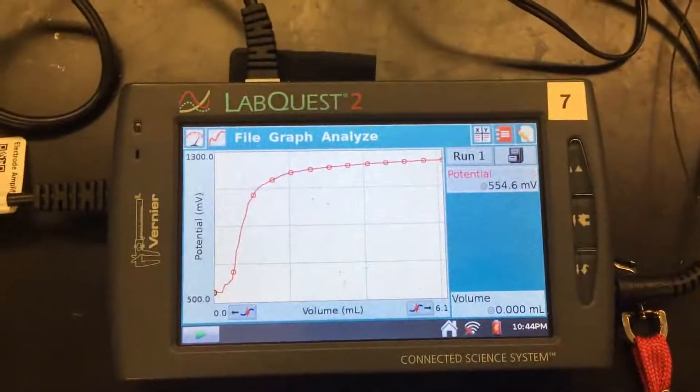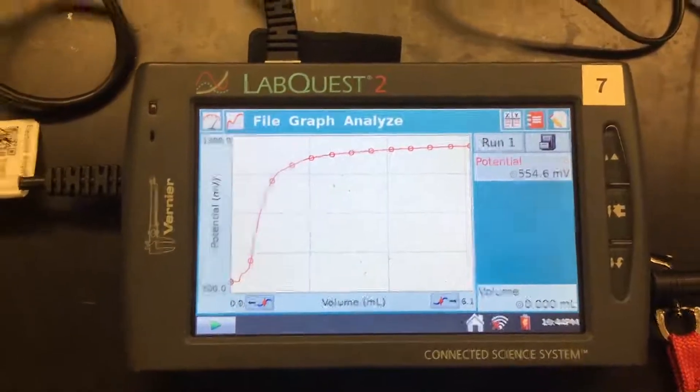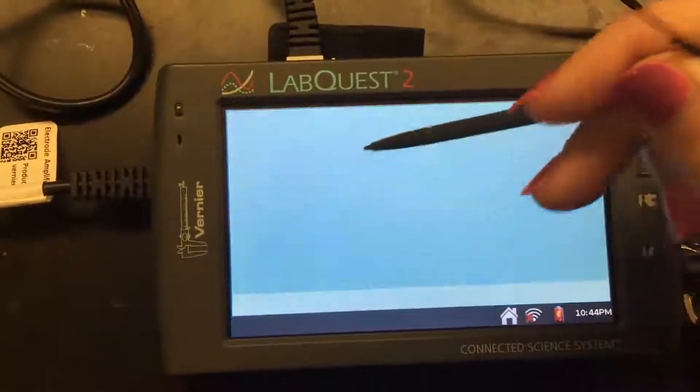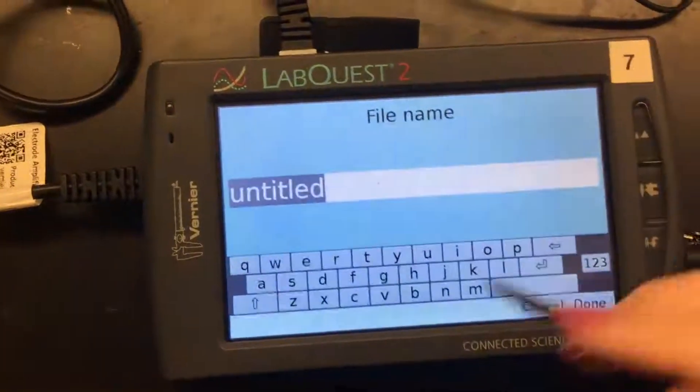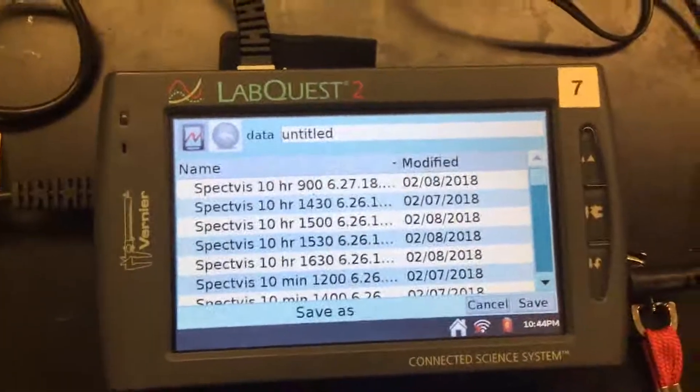So this is what the graph looked like in the end. So it reached the equivalence point. So now what we're going to do is we want to save it. So then we're going to click file, save, and then whatever title you want, and just click the box. And then you can type in whatever you want, and then click done, and then click save. And that's it.